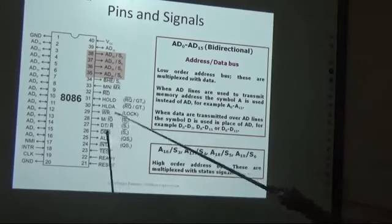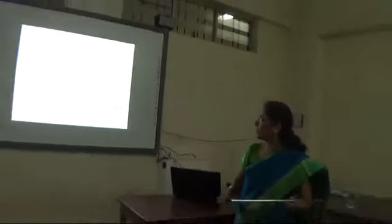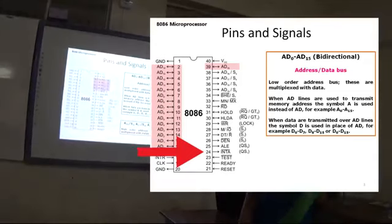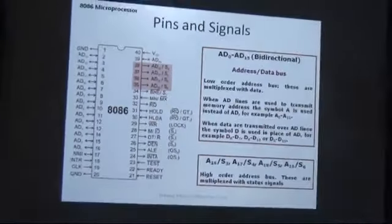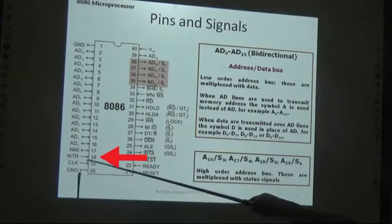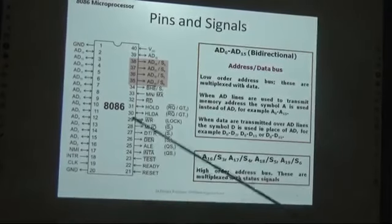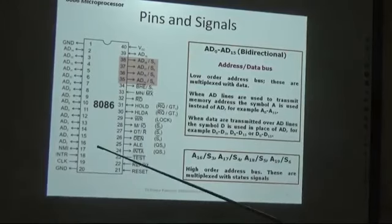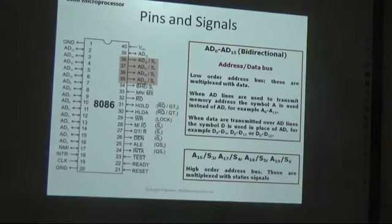Other functions are basically control functions useful for minimum and maximum mode of operation of the 8086, which we will see later. There is one pin called INTA-bar, which is interrupt acknowledgement, and INTR, which is the interrupt request. IO devices communicate with the CPU by first generating the INTR signal to the 8086. The 8086 will complete its current execution and then generate back the INTA-bar signal, giving the green signal for the IO device to transfer data. There is also NMI, the non-maskable interrupt, which is the highest priority interrupt signal.